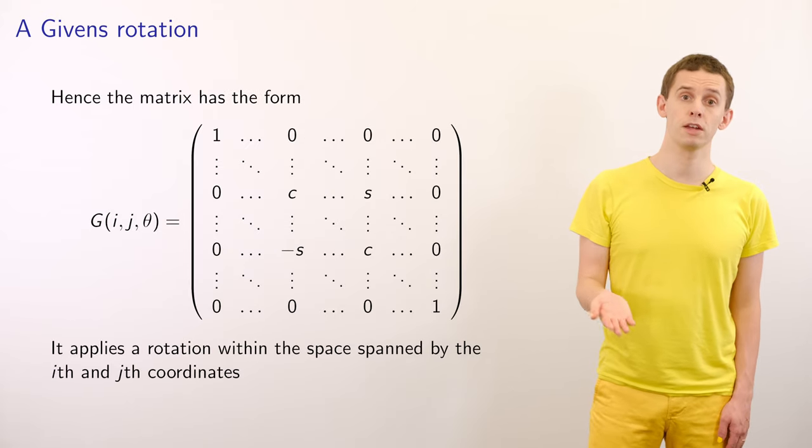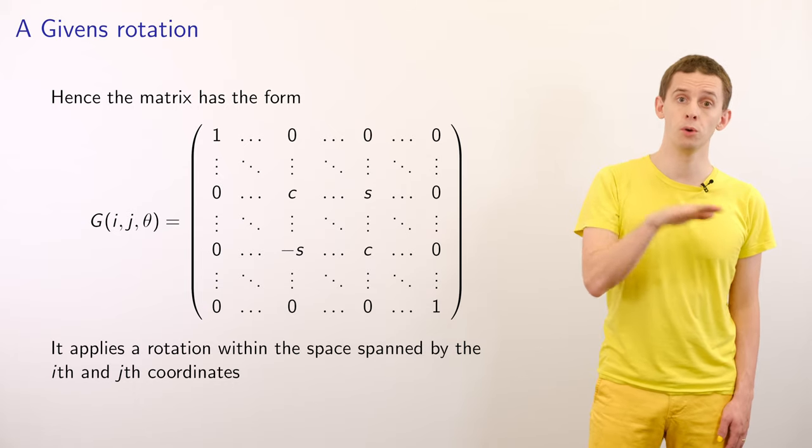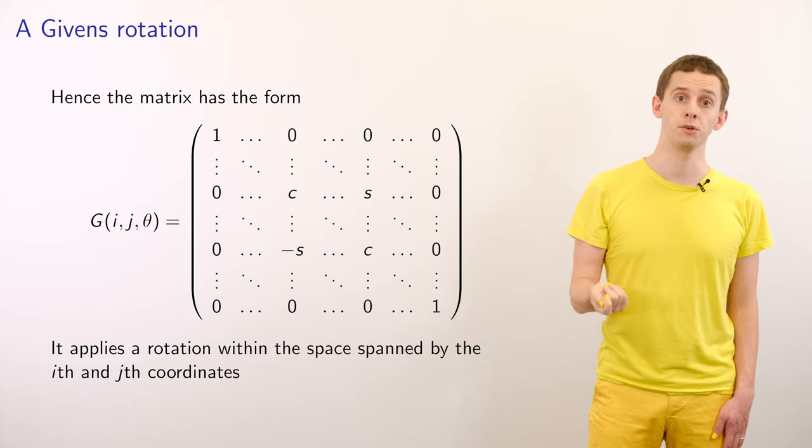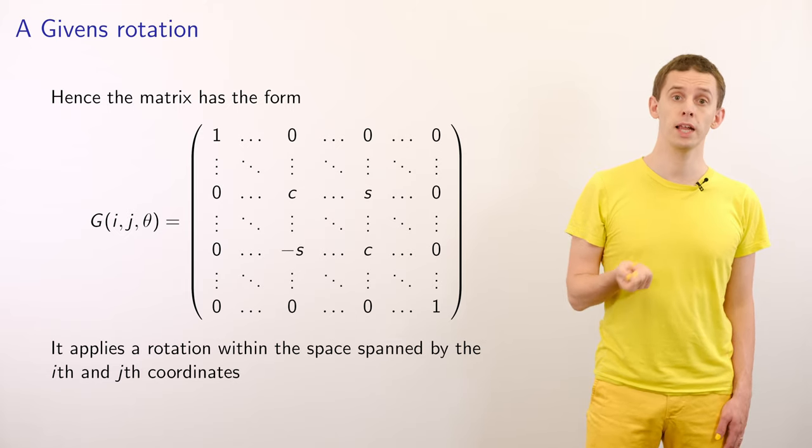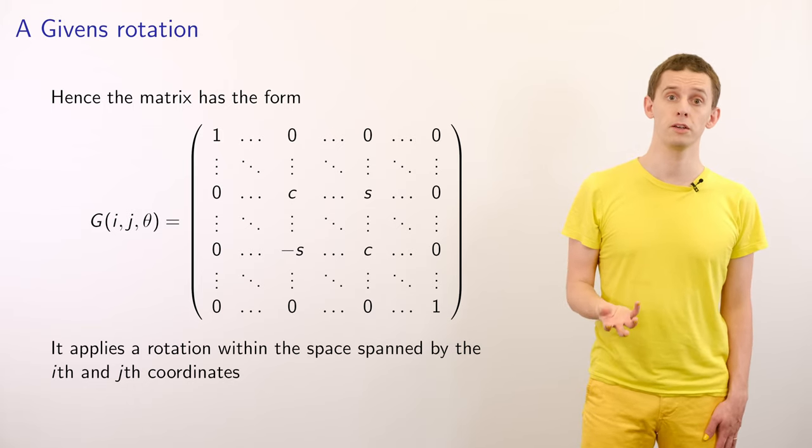Hence the matrix has the following form. We essentially have the identity matrix, but in the i and j rows and columns we have a rotation matrix of angle theta. So a Givens rotation is therefore an elementary rotation in a two-dimensional subspace of a larger space.